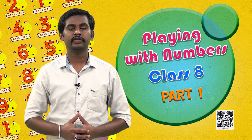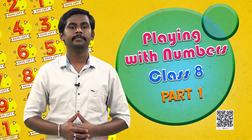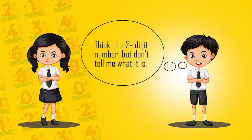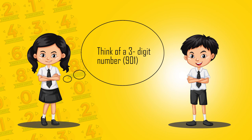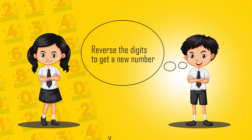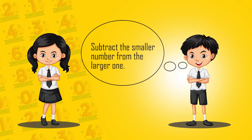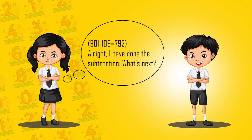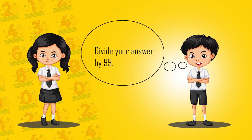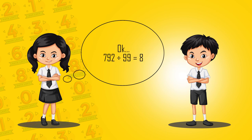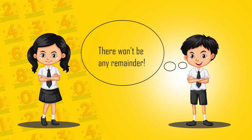Now it's Sundaram's turn to play the game. You also follow his instructions with Meenakshi and take part in the game. Think of a three-digit number, but don't tell me what it is. All right. Reverse the digits to get a new number. Okay. Subtract the smaller number from the larger one. All right, I have done the subtraction. What's next? Divide your answer by 99. Okay. There won't be any remainder. Yes, you are right.